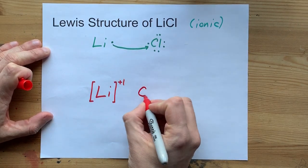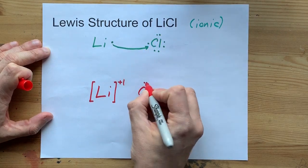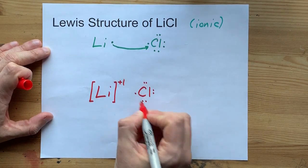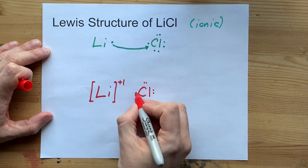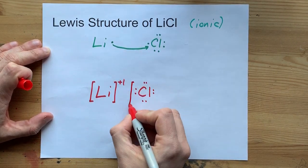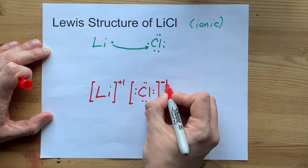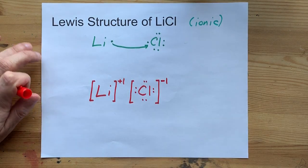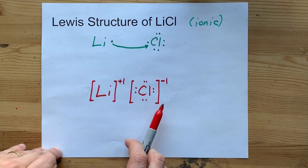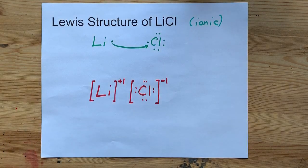Chlorine, on the other hand, now has a full 8 electrons: 1, 2, 3, 4, 5, 6, 7 that it had originally, plus the extra one that came from lithium. It has one extra electron, which gives it a charge of minus 1. So you put it in square brackets to show that it's an ion, minus 1 to show it has the one extra electron.